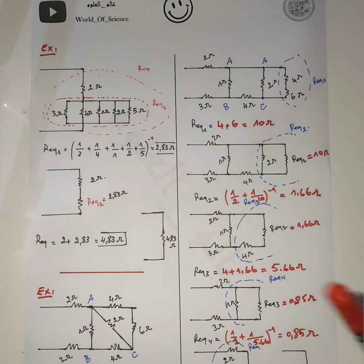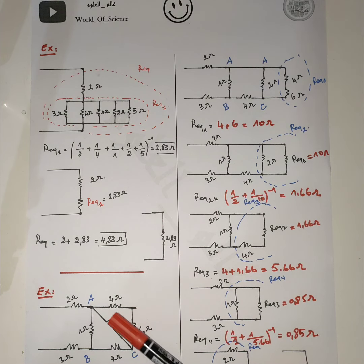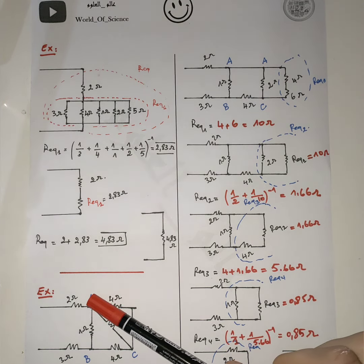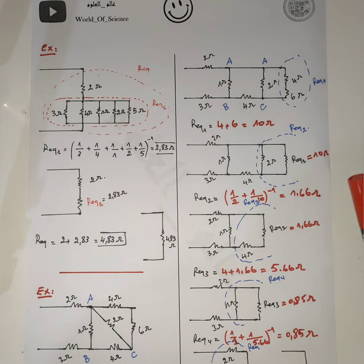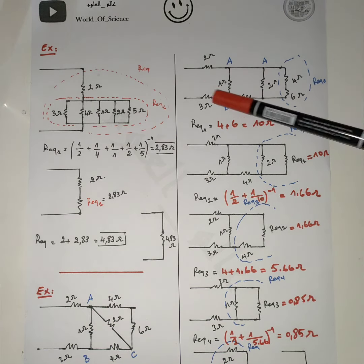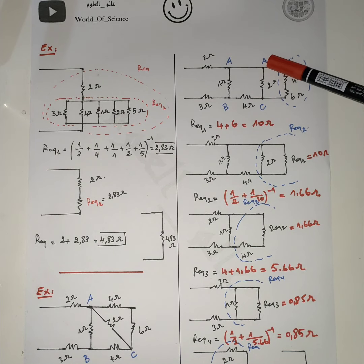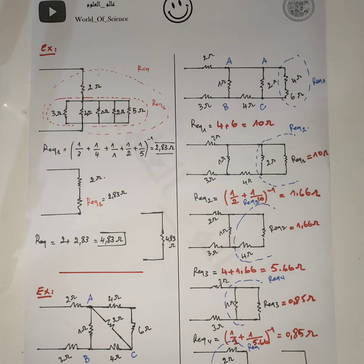Now we move to the last example. It seems difficult but is easy to solve — just focus and analyze the circuit step by step. I label this node as A, this node as C, and this node as B. The first thing to do is to simplify this circuit. I open this node to get the redrawn circuit. Node A and node A are the same — if we close it, we get back the original.